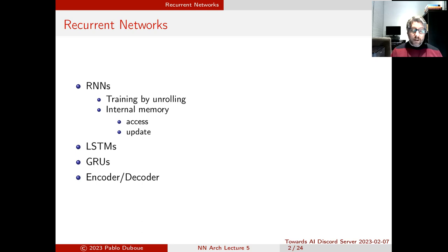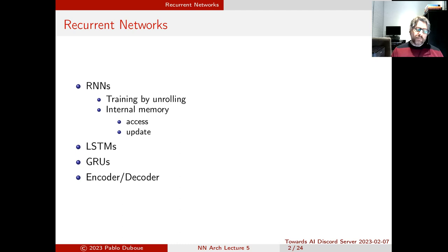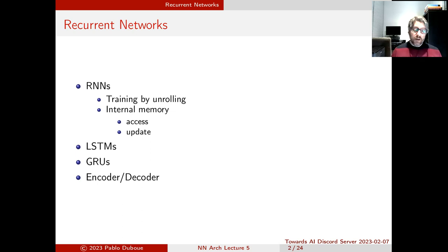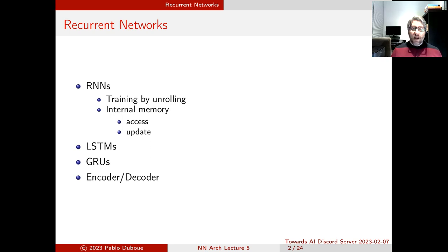At the beginning of the lecture we're going to talk about recurrent neural networks and how they are trained by unrolling, and the problem of vanishing or exploding gradients. We're going to discuss internal memories and how they can be accessed and updated, and then that will lead us into long short-term memories — LSTMs — which are the main topic of today's lecture. We're going to discuss a number of variants including the GRUs, and finally we are going to look into the encoder-decoder architecture and the use of attention mechanisms to make them work.